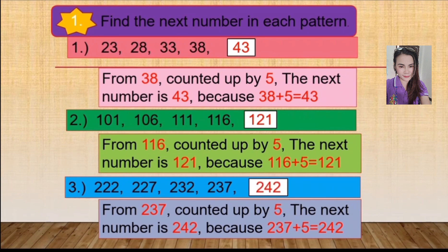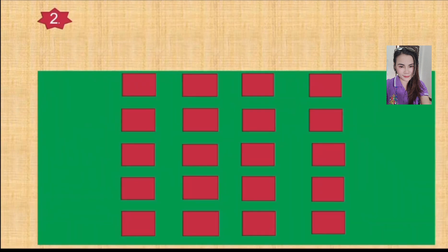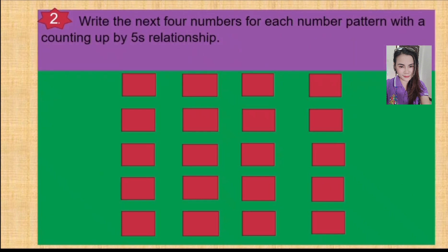Okay, very good — we did it together! Everyone, let us see exercise 2 on page 32: write the next four numbers for each number pattern with a counting up by 5 relationship. Let's do number 1 together. From 32, counted up by 5, or you can say 32 plus 5. In one hand you have 5 fingers — easy way to count. Let us do together: 32, 33, 34, 35, 36, 37. Very good!